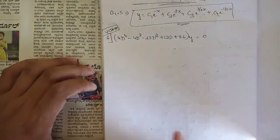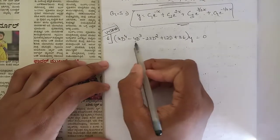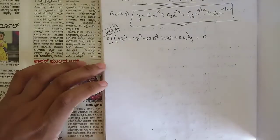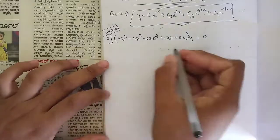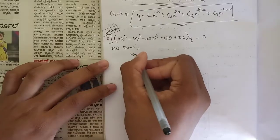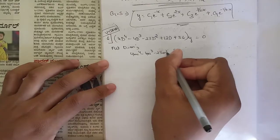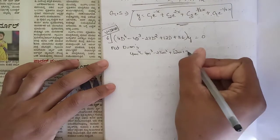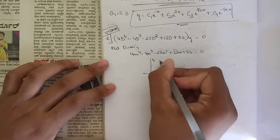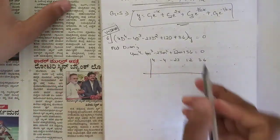The next important question is: 4D⁴ − 4D³ − 23D² + 12D + 36 = 0. Please note it down. Again, put D = m. The auxiliary equation becomes 4m⁴ − 4m³ − 23m² + 12m + 36 = 0. Write the coefficients: 4, −4, −23, 12, 36.